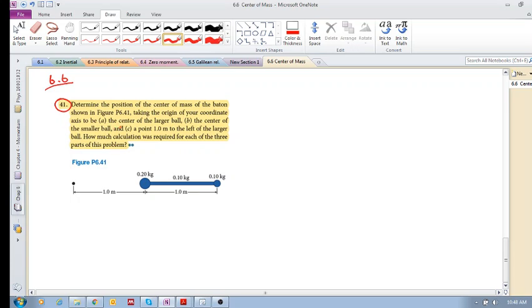I've been doing this in the ADU classes, so some of you might be familiar with it. Okay, so it says, determine the position of the center of mass of the baton shown in the figure, taking the origin of your coordinate axis at three different origins.